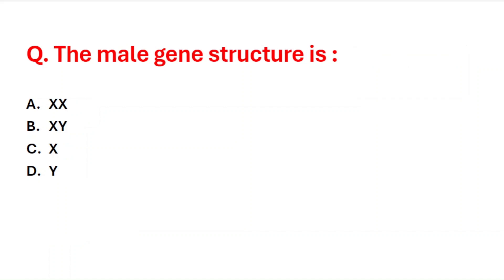Next question: the male chromosome structure is — A: XX, B: XY, C: X chromosome, D: Y. The right answer is option B, XY.